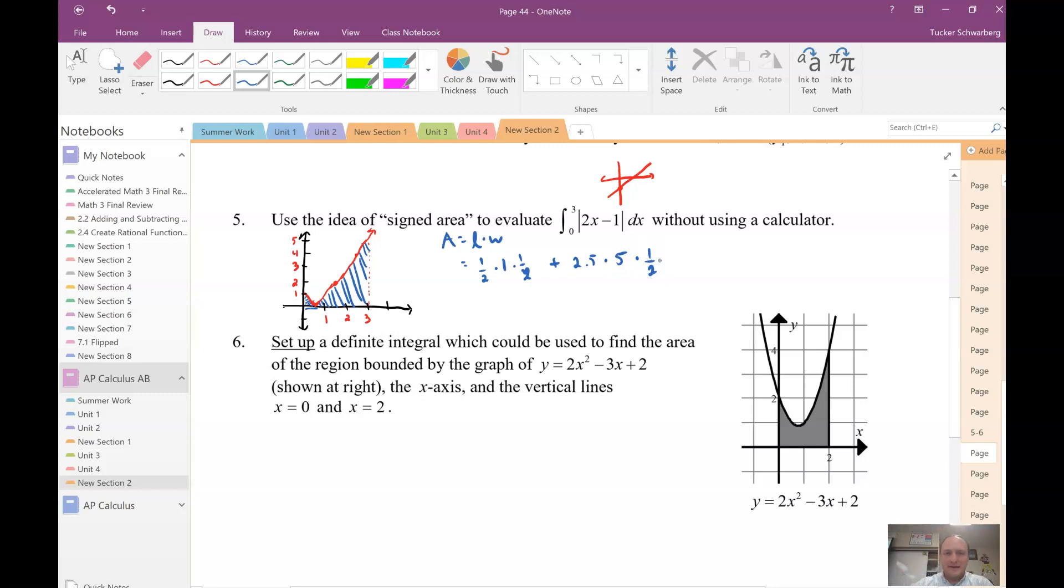All right. So we'll go ahead and compute this. So 1 half times 1 half gives us 1 fourths, okay, plus, and what I'm going to do here, I'm going to rewrite 2.5. This will make more sense. 2.5, that's 5 halves, okay? So if I'm computing all of this, we get 25 fourths, which gives us 26 fourths, which would be fine. You can reduce if you want to be 13 over 2. And there's your area, okay?